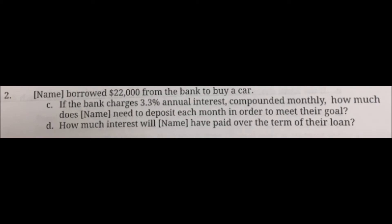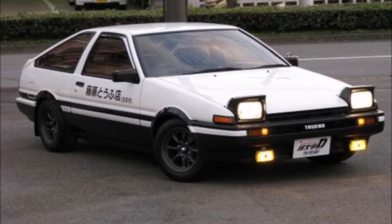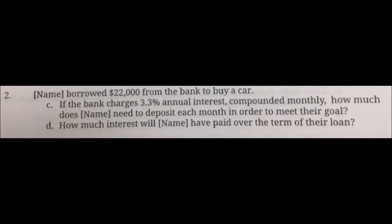Esteban Julio Ricardo Montoya de la Rosa Ramirez borrowed $22,000 from the bank to buy a car. Holy smokes! The first question is, if the bank charges 3.3% annually compounded monthly, how much does Esteban Julio Ricardo Montoya de la Rosa Ramirez have to deposit each month to pay it back? The second question is, how much interest will have Esteban Julio Ricardo Montoya de la Rosa Ramirez have paid over the course of the loan?